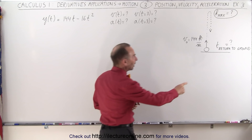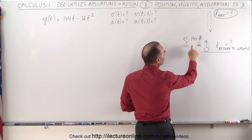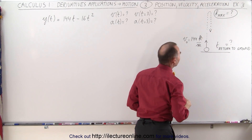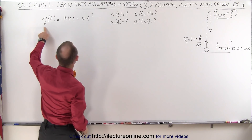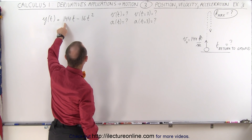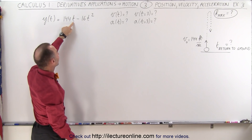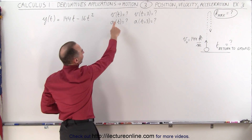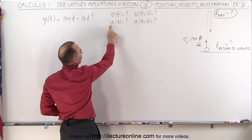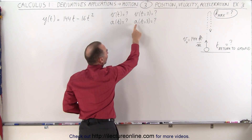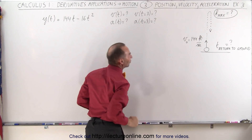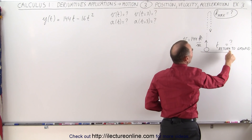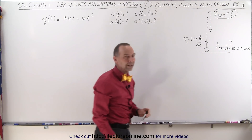Let's say that we throw an object up with an initial speed of 144 feet per second. It will reach maximum height and then come back down. Given the equation describing that motion — 144t (the initial velocity upward) minus 16t squared — we want to find the velocity as a function of time, the acceleration as a function of time, and evaluate them at t equals 3. We also want to find the maximum height and how long it will take for the object to return to the ground.